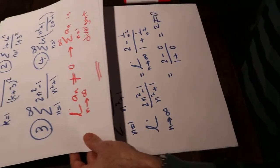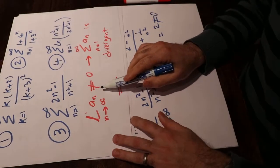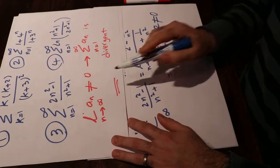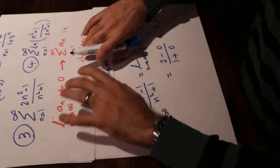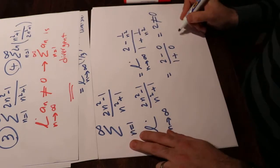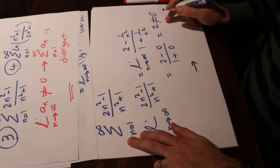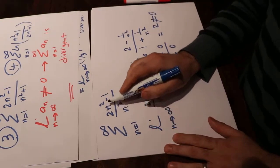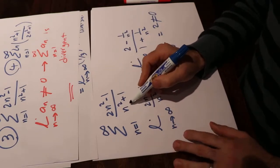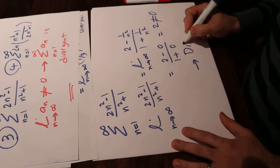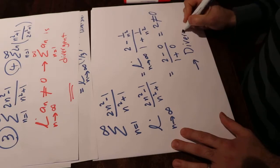According to this test, when the limit of aₙ is not equal to zero, you can conclude that the series is divergent. Therefore the conclusion is that sigma (2n²-1)/(n²+1) from n=1 to infinity is divergent.